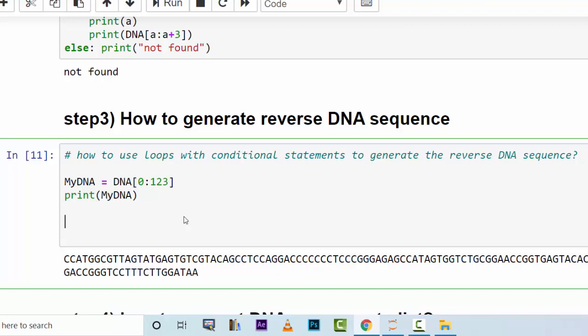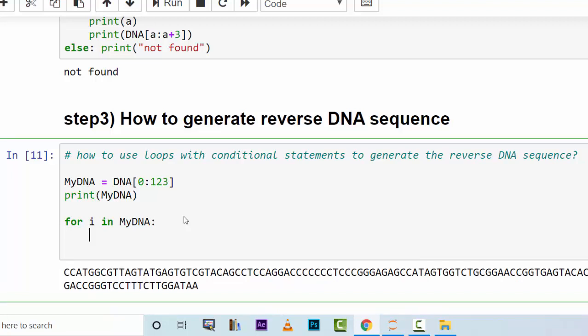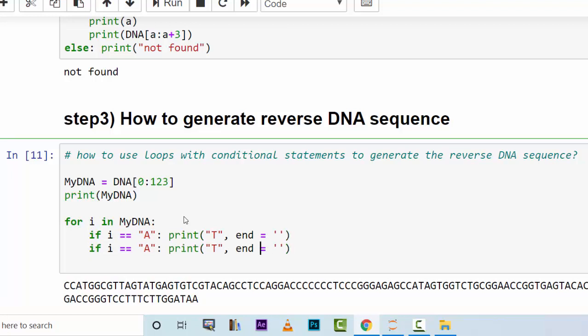How to do so? You say for i in myDNA, if i is equal to a, do something, print, you print out something. Here we print out t, and we say end is equal to empty string. You can copy this several times, but change it to elif. Elif is equal to t, change it to a.